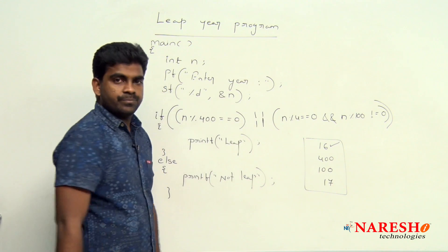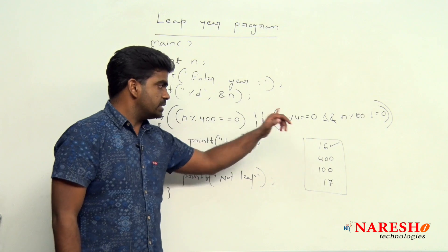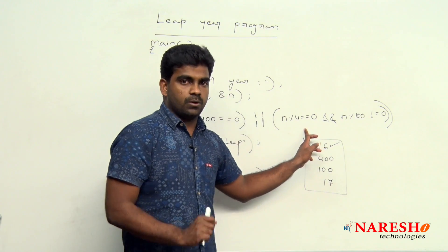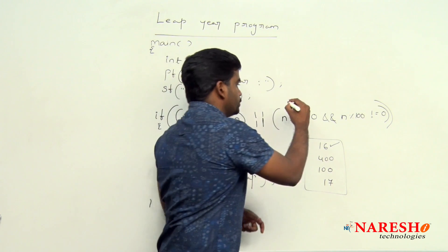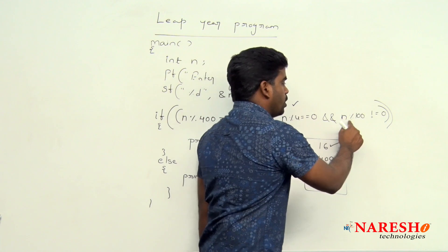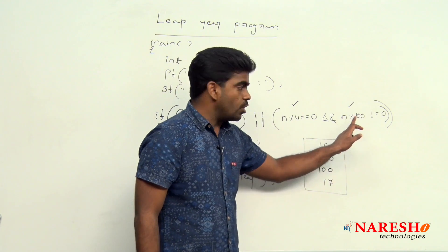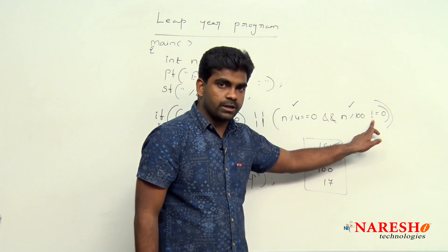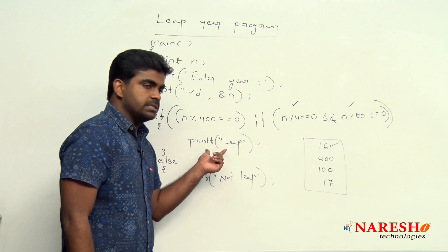Since it's an OR operator, if the first condition fails it checks the second. 16 % 4 == 0 — yes, condition true, 16 is divisible by 4. And 16 % 100 != 0 — yes, condition true, because 16 is not divisible by 100. Both conditions are true, so the output is: it is a leap year.